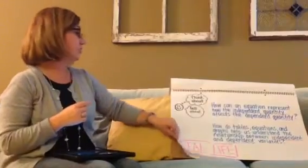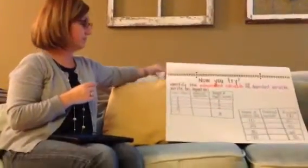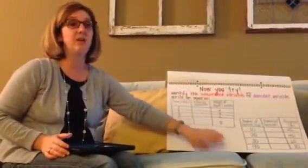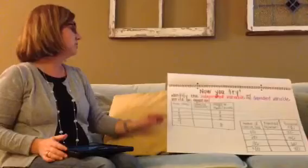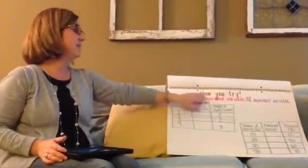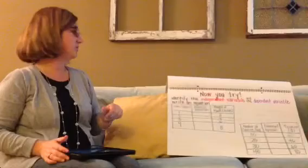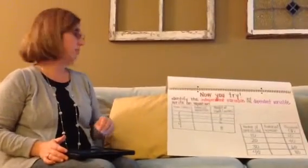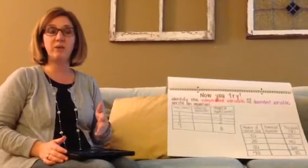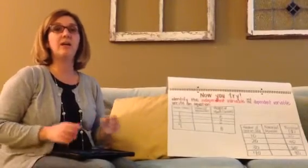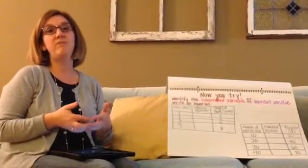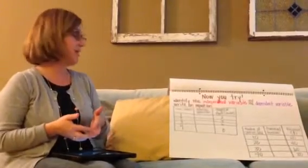Now I'm going to give you a chance to try. With your partner, you're going to get a problem similar to one of these. Talk about the independent and dependent variable and make sure you identify those first. After identifying the variables, write an equation. While you're working, I'll be walking around helping. I really value friends working together, in addition to finding the right math.